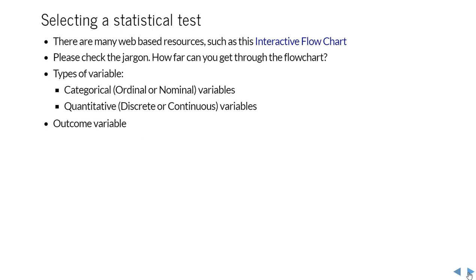We have to deal with how you select an appropriate statistical test. There are many resources that will help you with this, such as the interactive flow chart which is linked here. I would ask you to check the jargon, have a look at that flow chart and see if you understand enough to get through to the point where you select a test. The type of variable can determine the kind of procedure you can use. The other thing you need to remember is the importance of selecting your outcome variable in advance of anything else you do.